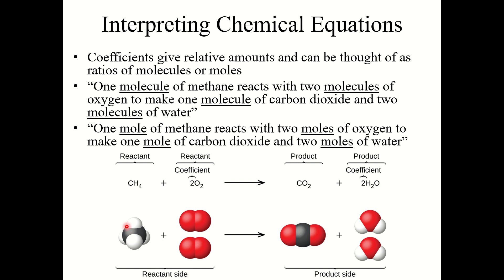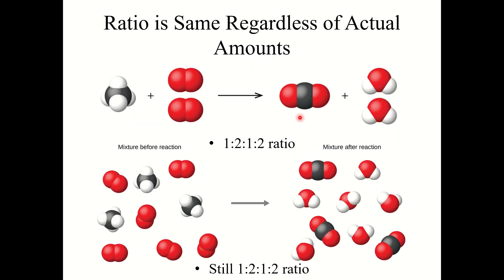I could just as easily say 1 mole of methane reacts with 2 moles of oxygen gas to make 1 mole of carbon dioxide and 2 moles of water. Now it's important to note that this ratio is the same regardless of actual amounts. For example, 3 molecules of methane with 6 molecules of oxygen gas gives 3 molecules of CO2 and 6 molecules of water — still a 1:2:1:2 ratio.